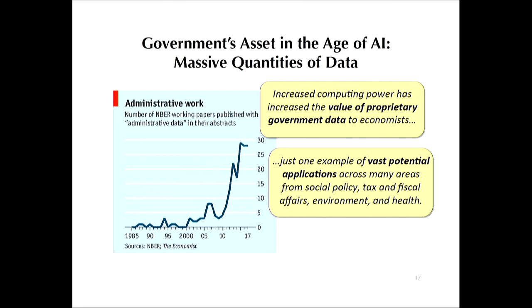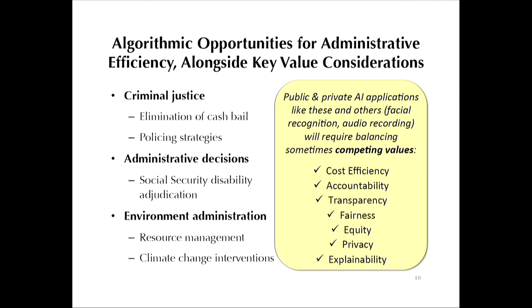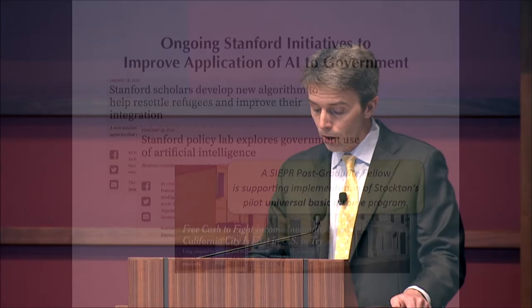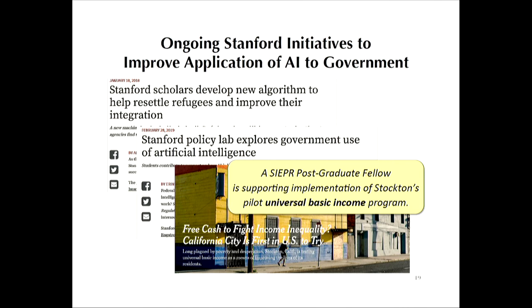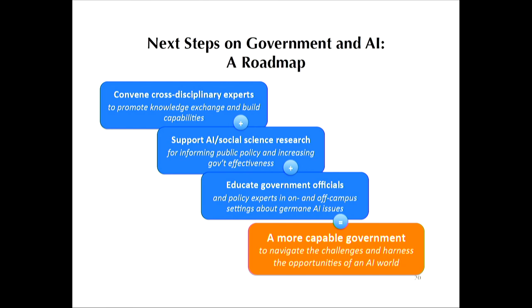That data can be put to use to increase efficiency and achieve social objectives in areas including education, safety net programs, environmental regulation, criminal justice, health care policy, and much more. The use of algorithms will raise issues about striking the right balance between competing values, such as equity and efficiency, privacy and transparency. There's already Stanford-sponsored work to improve the effectiveness of government policy, including a pilot universal basic income program in Stockton, California. The road ahead involves convening the mix of scholars that can advance this research, as well as educating policymakers about the real issues involved with AI — with the goal of a government more capable of addressing the critical issues of the era of artificial intelligence.